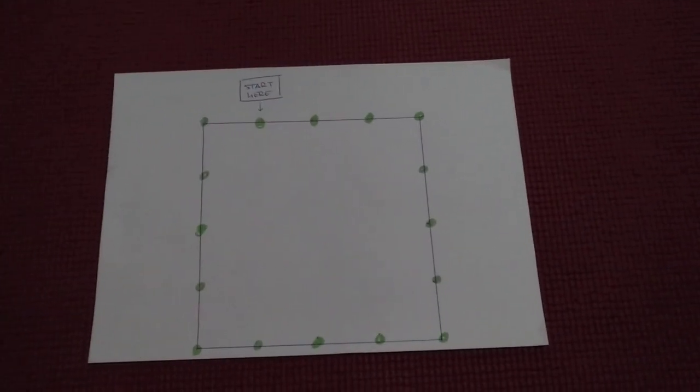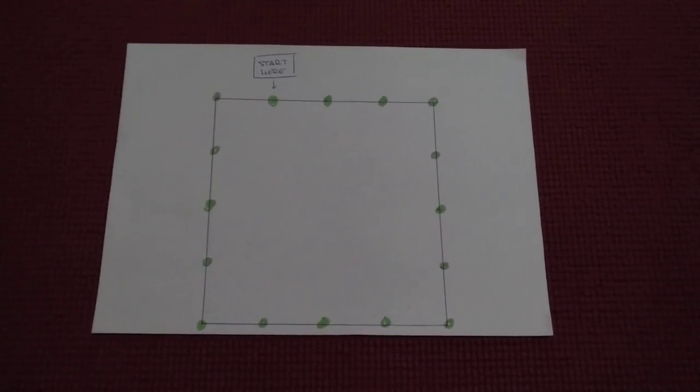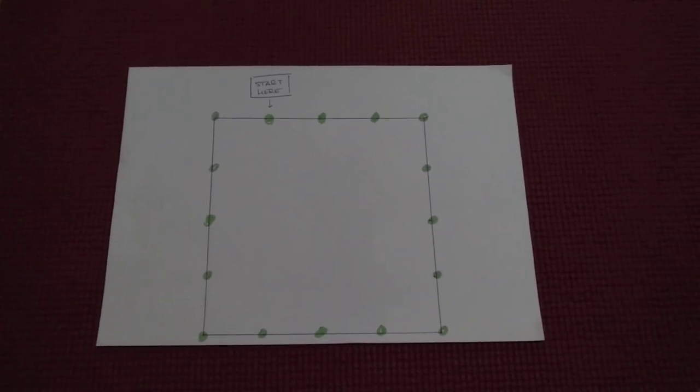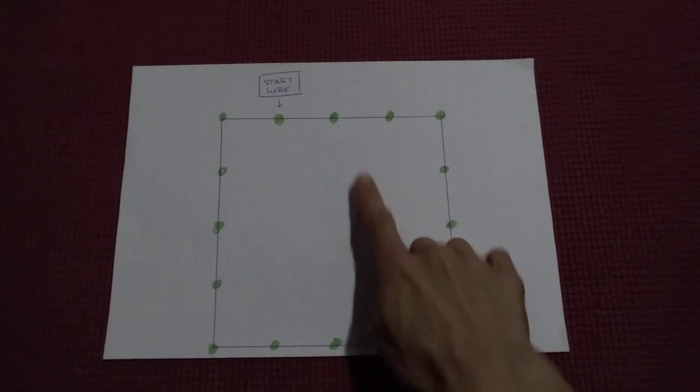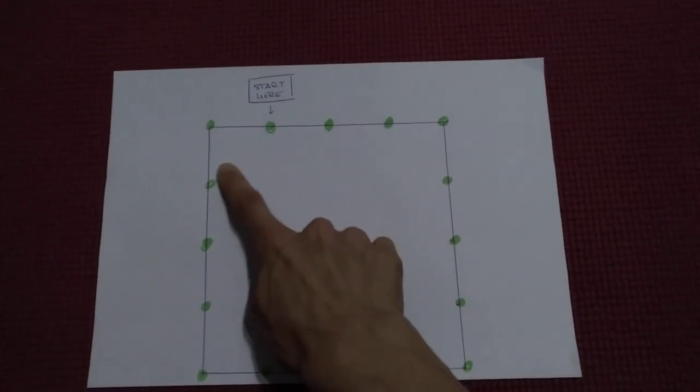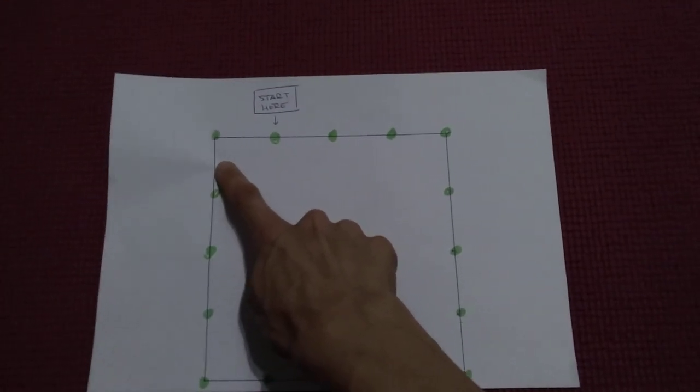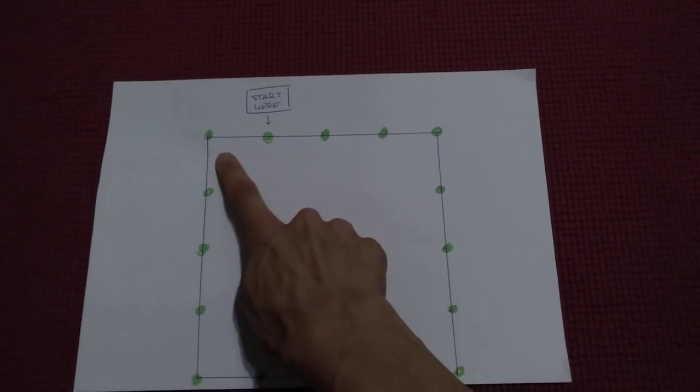Let's begin. Sit in a meditative pose like Sukhasana and place your paper in front of you. We are going to start from here, as you can see. It's not the edge because we will need this edge for the last exhale cycle.